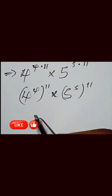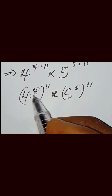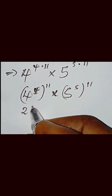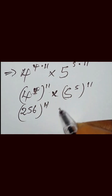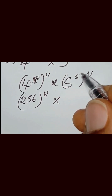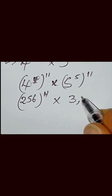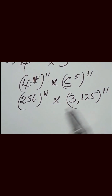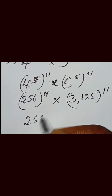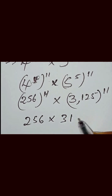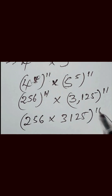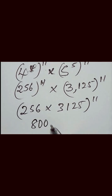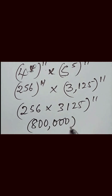Simplifying this, 4 raised to the power of 4 can be written as 256, raised to the power of 11, multiplied by 5 raised to the power of 5, which can be written as 3125, raised to the power of 11. So this becomes 256 multiplied by 3125, into bracket raised to the power of 11. Multiplying these we have 820,000 raised to the power of 11.